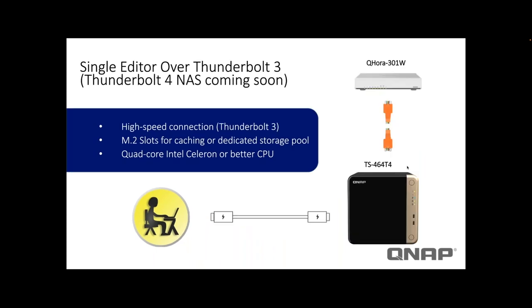In this second scenario, there's a single editor accessing a single NAS, but in this case the editor is accessing the NAS directly via Thunderbolt 3. This Thunderbolt connection is a Thunderbolt over IP connection, so the editor would still need to mount the folder rather than seeing it appear the way an external drive would. But this provides a connection at very high speeds and is still pretty simple to deploy. We're looking at our upcoming Thunderbolt 4 model, but we currently have a Thunderbolt 3 model that is very similar — both include M.2 slots for faster drive speed and an Intel Celeron processor.